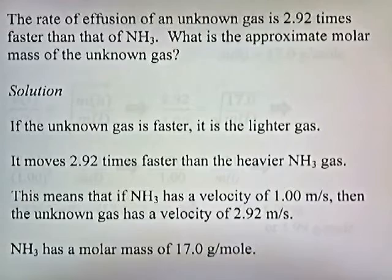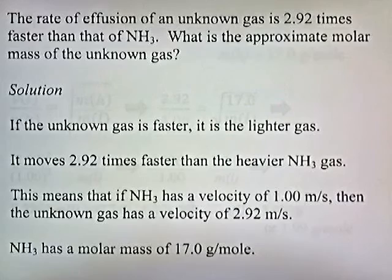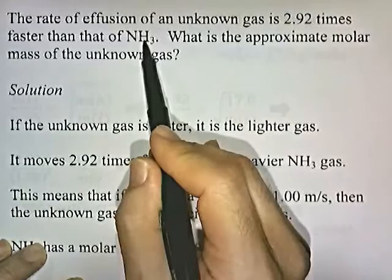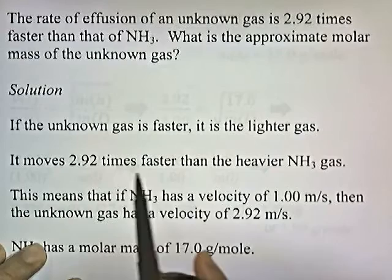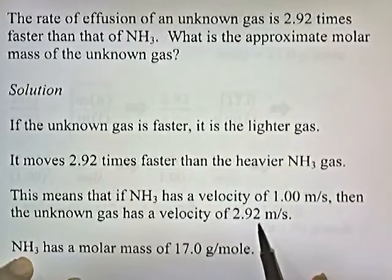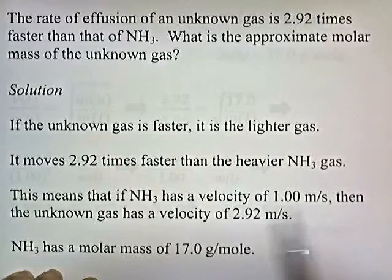The rate of effusion of an unknown gas is 2.92 times faster than that of NH3. What is the approximate molar mass of the unknown gas? Well, here's how we solve it. So, if the unknown gas is faster, it's the lighter gas. So, this unknown gas travels 2.92 times faster than NH3. So, since it's faster, it's the lighter gas. So, it moves 2.92 times faster than the heavier gas. And that means that if NH3 has a velocity of 1 meter per second, then the unknown gas has a velocity of 2.92 meters per second. It moves 2.92 times faster.